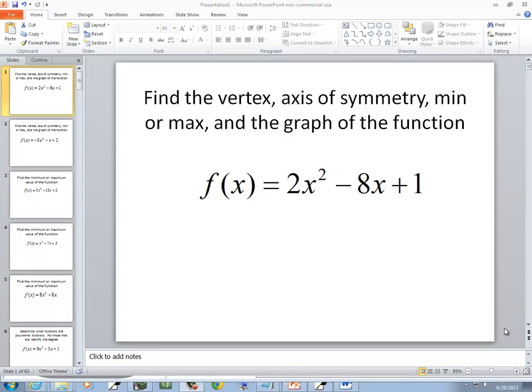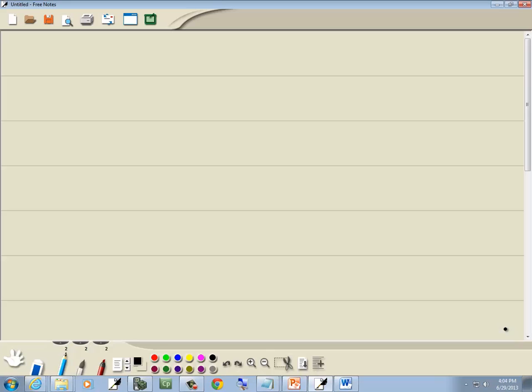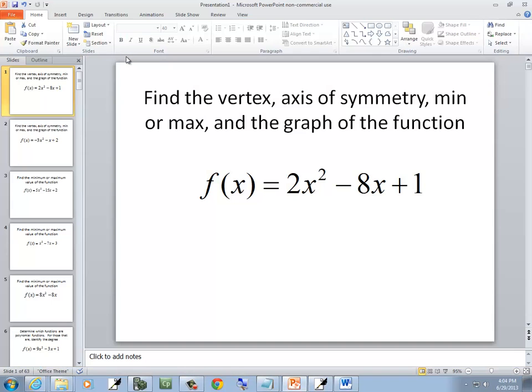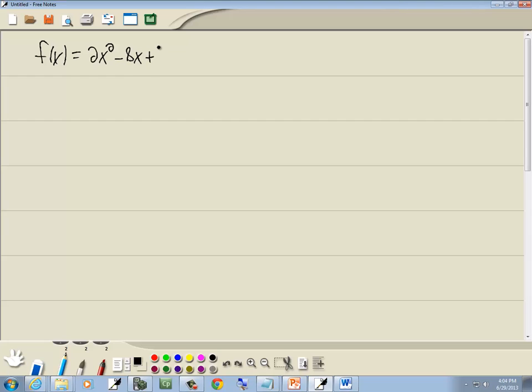In this problem we want to find the vertex, axis of symmetry, min or max, and the graph of the function. So we've got f(x) = 2x² - 8x + 1.